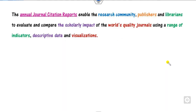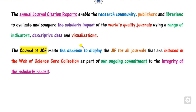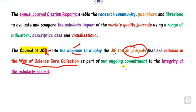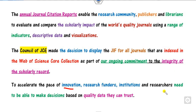The annual JCR report enables the research community, publishers, and librarians to evaluate and compare the world's quality journals based on indicators, descriptive data, and visualizations. The council of the Journal Citation Reports made the decision to display the journal impact factor for all journals indexed in the Web of Science core collections. As discussed, the impact factor was only for SCIE and SSCI, but now the council has decided to display it for all WoS-indexed journals. This will accelerate the pace of innovation and help research funders and researchers make decisions.